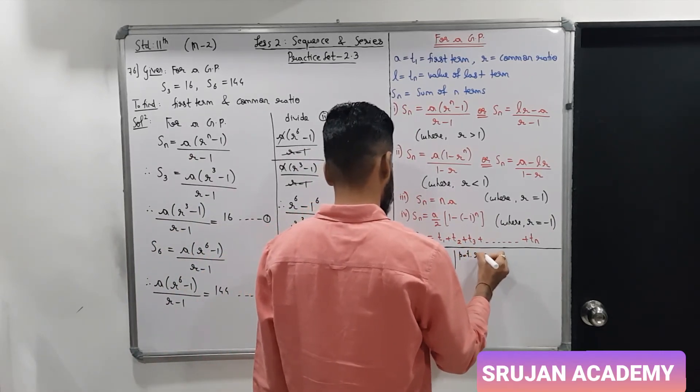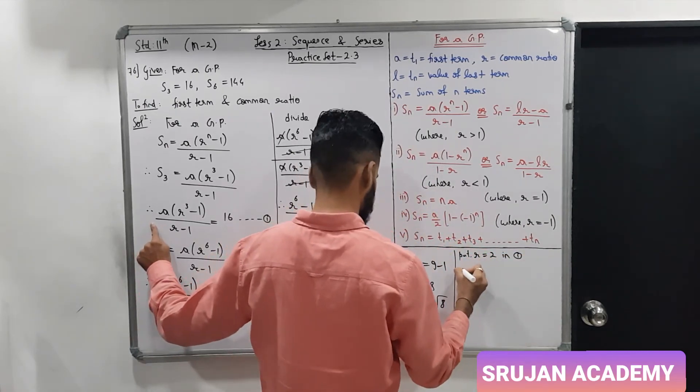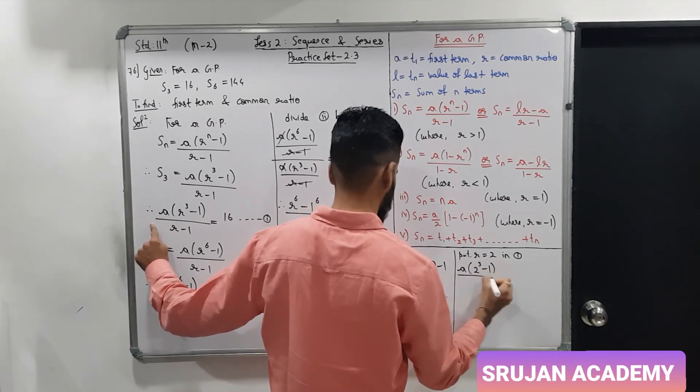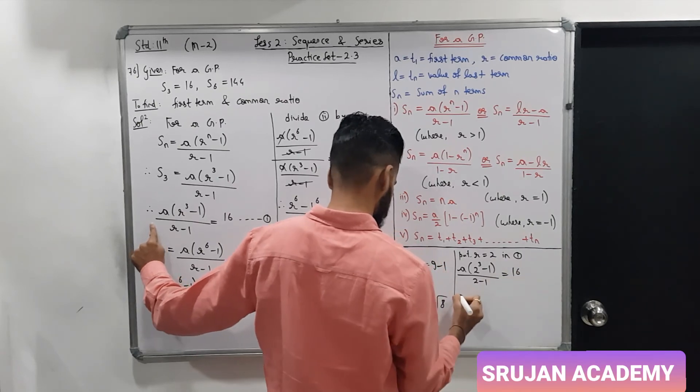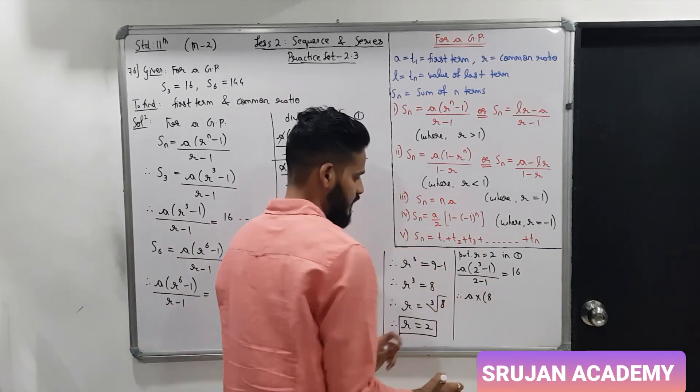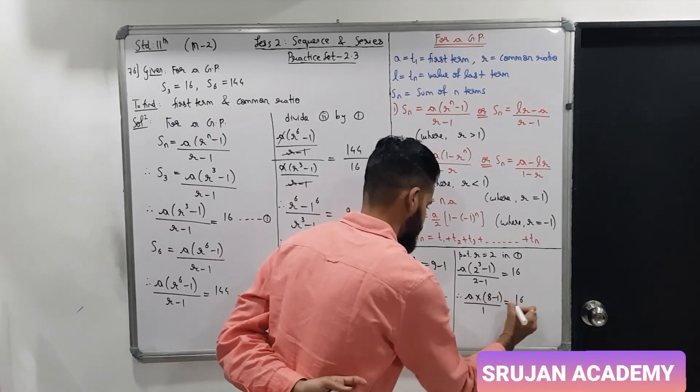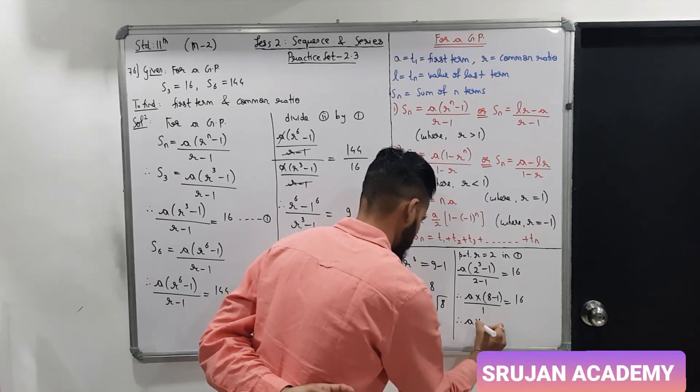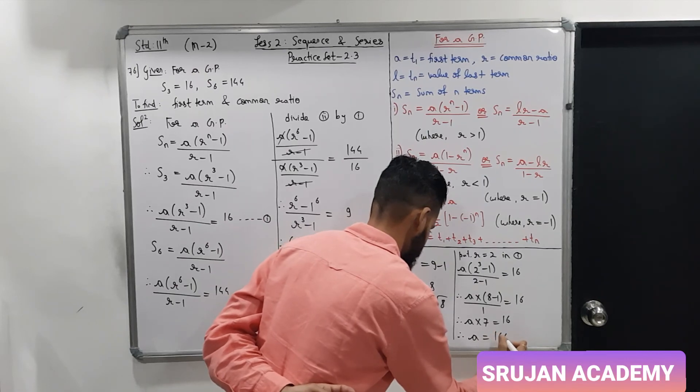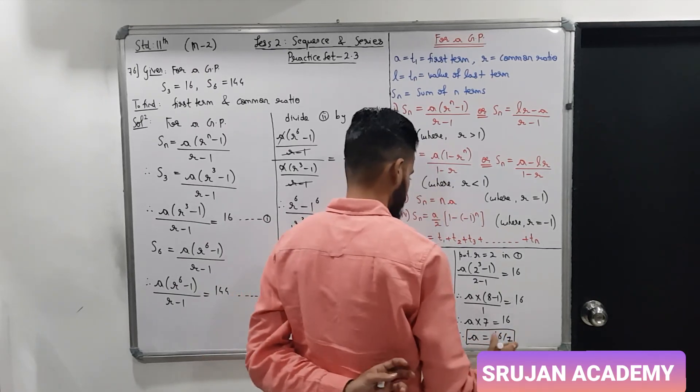Now we have to find a value. So, put R equals 2 in equation 1. This is a, R is 2, 2 cube minus 1 upon 2 minus 1. This is a into 2 cube is 8 minus 1, 2 minus 1 is 1. So a into 7 is 16. A is 16 by 7.